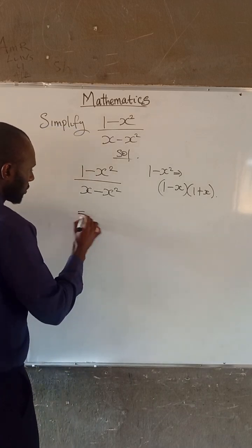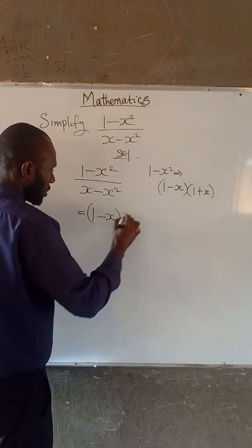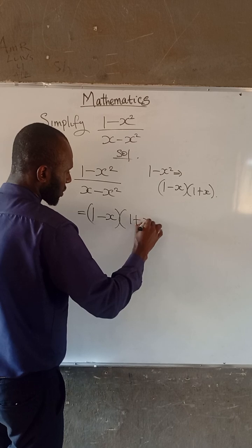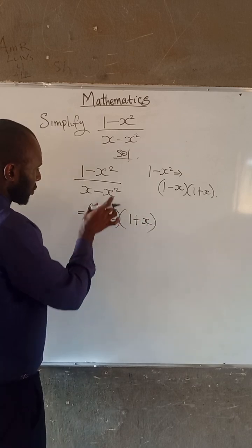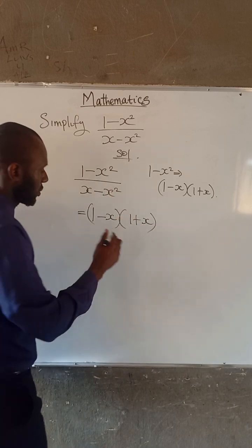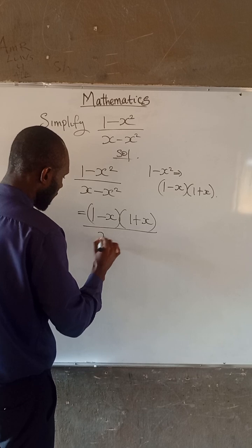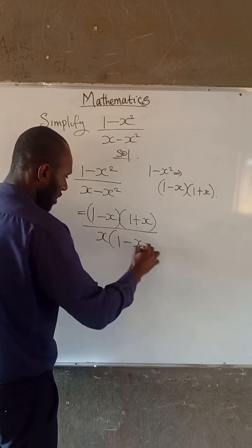So this becomes 1 minus x multiplied by 1 plus x. And we can factor out x from the denominator. So if we do that we have x being factored out. But we have 1 minus x.